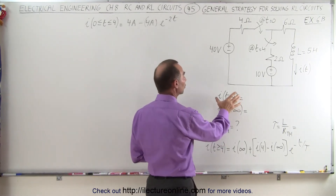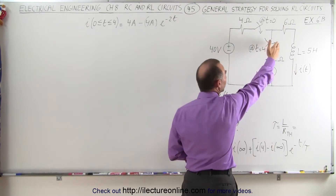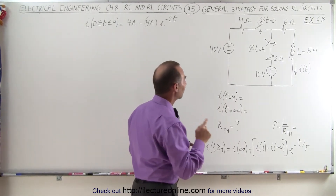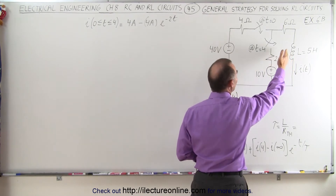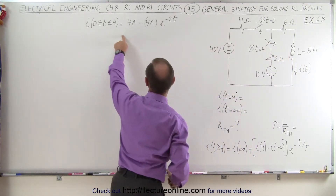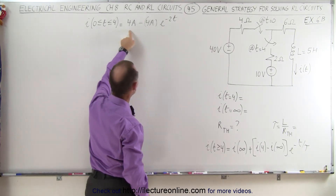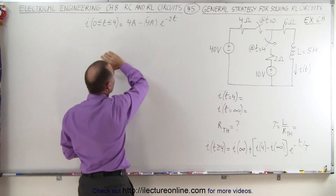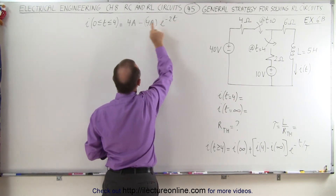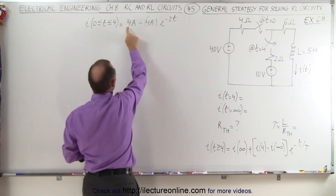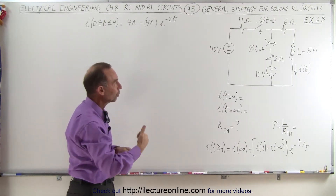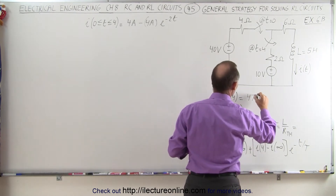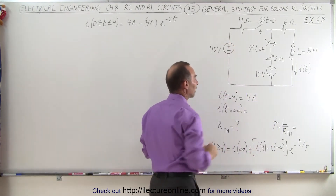We first want to find the initial current. The initial current through the inductor will occur when the second switch closes at four seconds — that will be the initial condition of the second part of the problem. The current through the inductor will be exactly the same as before the switch closed. The current through the inductor between zero and four seconds was defined by the previous equation, and since the time constant was small enough, after four seconds we will have reached maximum current. So the current through the inductor at t=4 seconds was four amps. When we close the second switch at that very moment, the current will continue to be four amps because the inductor opposes a change in current.